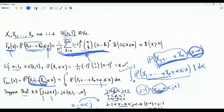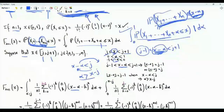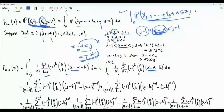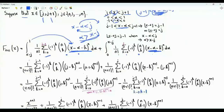Using the induction hypothesis, we substitute x minus alpha for x, obtaining an expression for the CDF of the sum of n plus 1 IID uniform random variables as two integrals. Swapping integration and summation — valid since both sums are finite and integrals are linear — we integrate each term. For the first integral the limits are x minus j to 1, and for the second from 0 to x minus j. This yields differences between two terms for each sum.